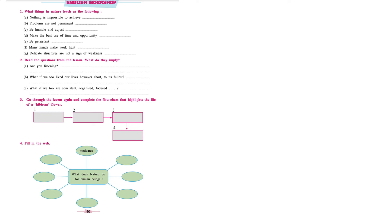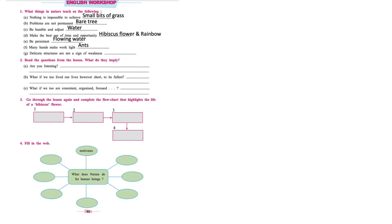Page number 40, English Workshop. First question: what things in nature teach us the following? 'Nothing is impossible to achieve' — we learn this from small bits of grass. 'Problems are not permanent' — we learn this from a bare tree. 'Be humble and adjust' — from water. 'Make the best use of time and opportunity' — from the rainbow and the hibiscus flower. 'Be persistent' — from flowing water. 'Many hands make light work' — from the ants. 'Delicate structures are not a sign of weakness' — from the spider web.